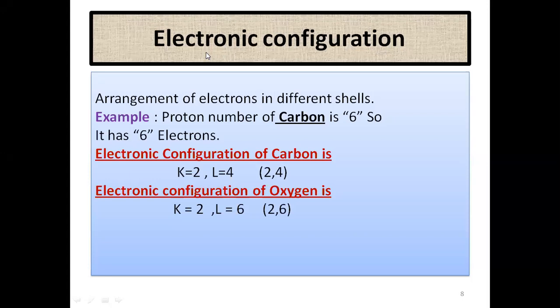Today I will discuss electronic configuration. Electronic configuration means the arrangement of electrons in different shells. As we know, a shell is the outer part of an atom where electrons are present.